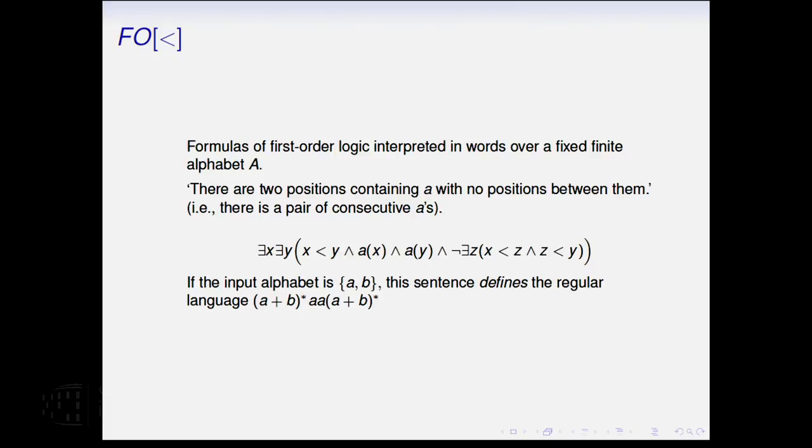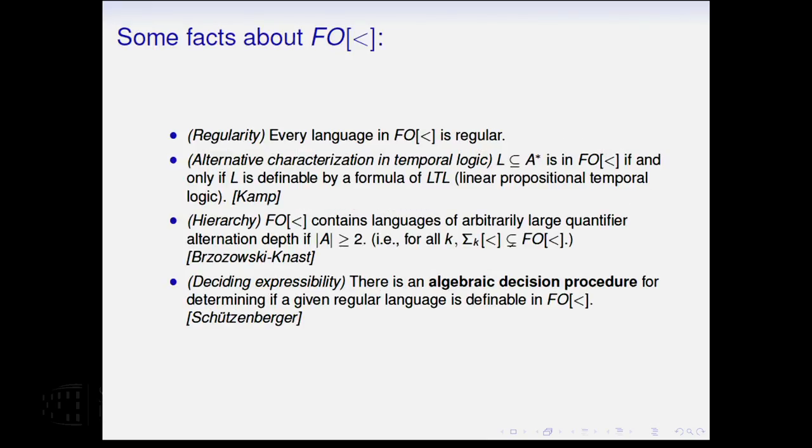For example, this one here, this sentence, says that there's two positions. There's a letter A in both of those positions, and this part here says that there's no position strictly between them. So you put it together. This sentence defines a regular language. If you think of the input alphabet as AB, this sentence defines a regular language consisting of all the words that have two consecutive A's.